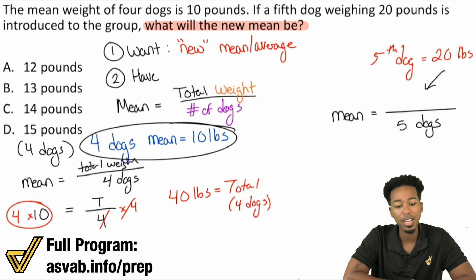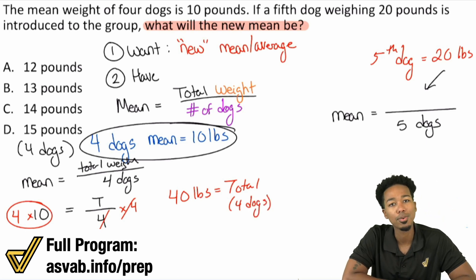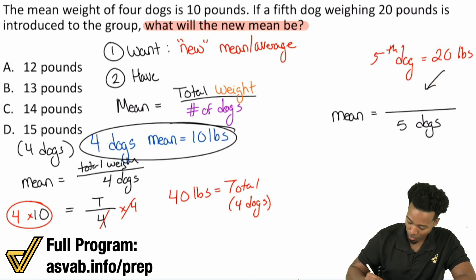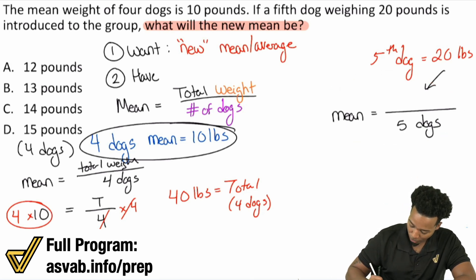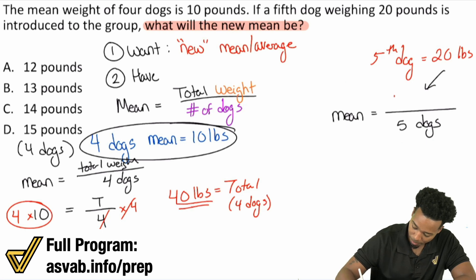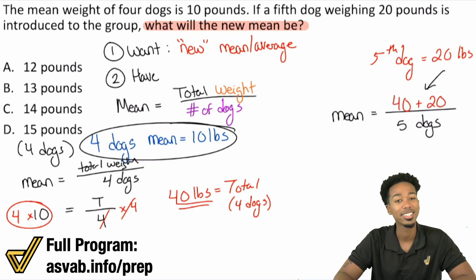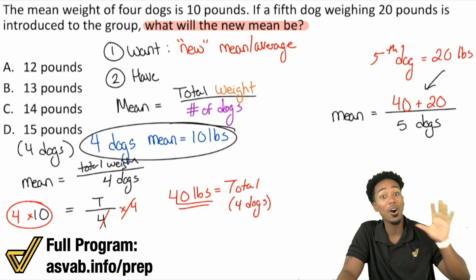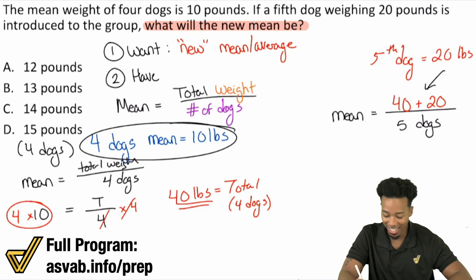To get the total weight of five dogs, we're going to take the 40 pounds from the four dogs plus the 20 pounds for the fifth dog. That gives us the total weight of all five dogs.